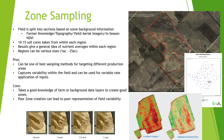In zone sampling, the field is split into sections based on some sort of background information. This could be farmer knowledge, topography, yield, aerial imagery, or in-season NDVI from satellite. Ten to 15 cores are taken from within each region, and results give soil average levels within those regions. Regions can vary substantially in size from 1 acre to 25 acres. Some of the pros of zone sampling are that it can be one of the best sampling methods for targeting different production areas and can capture significant in-field variability for variable rate application of inputs. Cons are that it takes good knowledge of the field or background data layers to create good zones — poor zone creation can lead to poor representation of field variability, so be careful when choosing a zone sampling program.